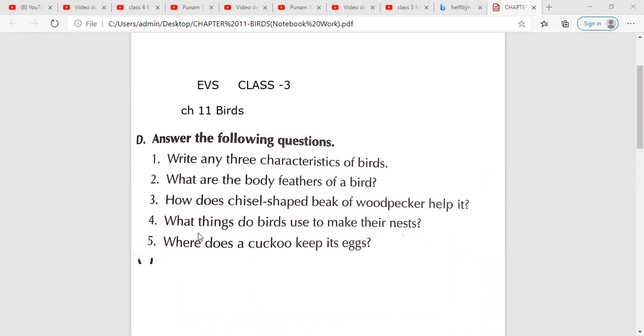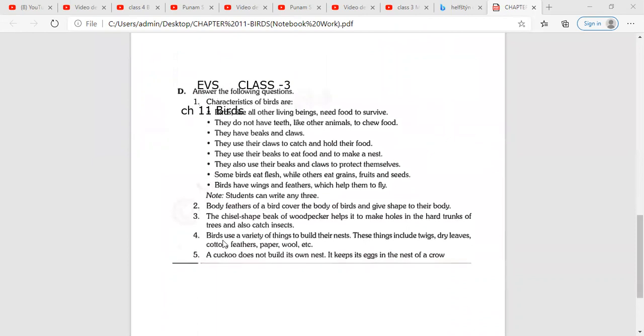Then, question number four. What things do birds use to make their nests? Answer: birds use a variety of things to build their nest. These things include twigs, dry leaves, cotton feathers, paper, wool, etc.